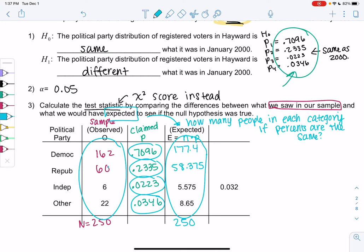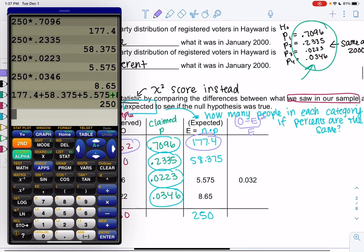This is if everything's the same and this is what actually happened. If I look at Republicans, there's really not much change - 60 compared to 58. Independents, 6 compared to 5.575, not a big change. Other, 22 and 8.65 definitely has a bigger change. Democrats, 162 compared to 177. We're going to find this new thing called chi-square. We're going to do O minus E, so it's different from Z-scores. We're going to square it and divide by E. We're basically going to find the difference, square it to get rid of that negative issue, and then compare it to the expected by dividing.